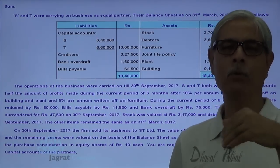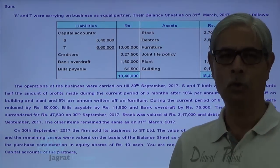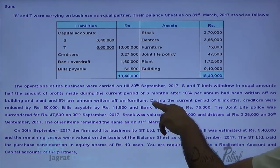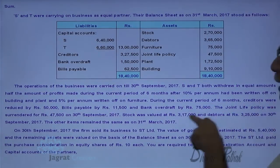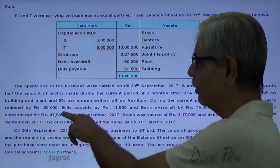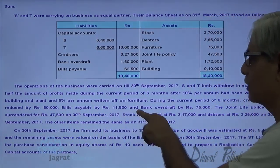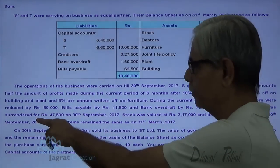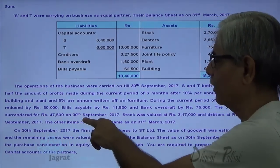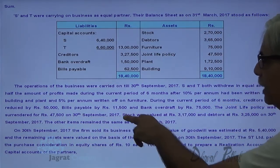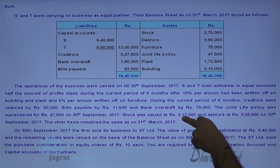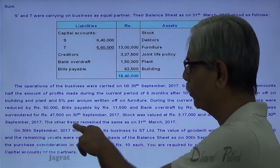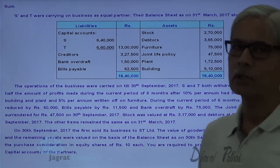The profit amount itself is not directly told to us. But during the current period of 6 months, the creditors reduced by 50,000, bills payable by 11,500, bank overdraft by 75,000. The joint life policy was surrendered for 47,500 on 30th September 2017. Stock was valued at 3,17,000 and debtors at 3,25,000 on 30th September 2017. Other items remained the same as on 31st March.